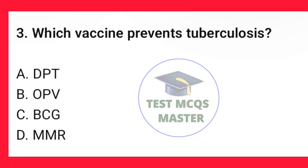Question number 3. Which vaccine prevents tuberculosis? The correct option is C — BCG.